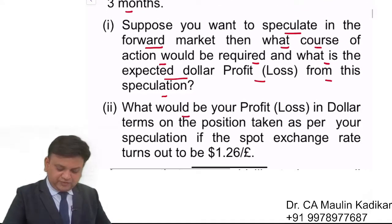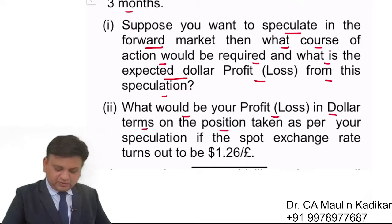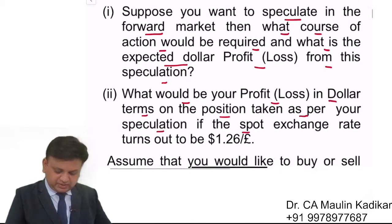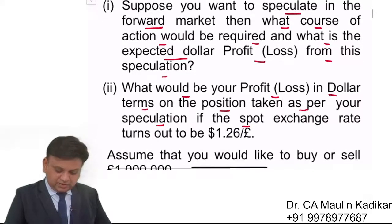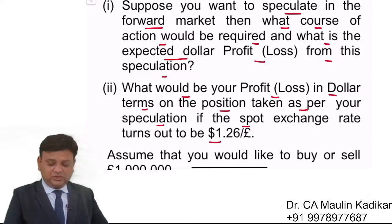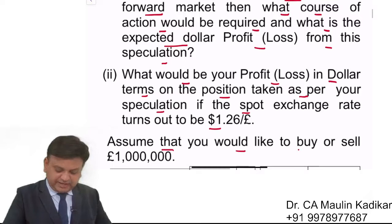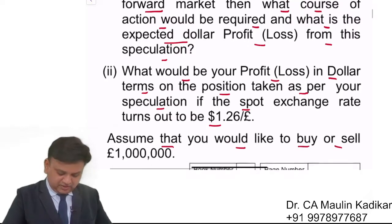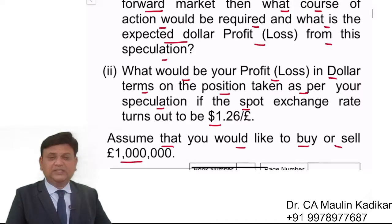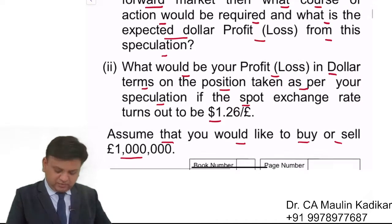Second: what would be your profit or loss in dollar terms on the position taken as per the speculation, if the spot rate turns out to be $1.26 per pound? Assume that you would like to buy or sell £1 million.